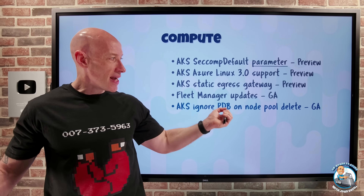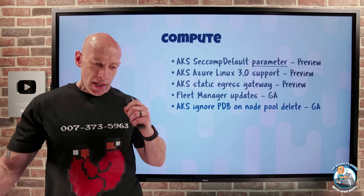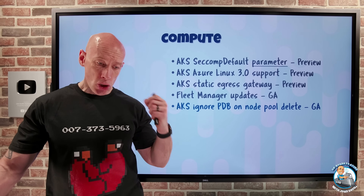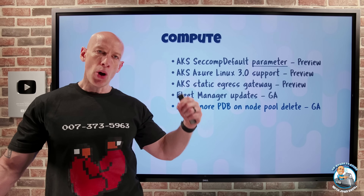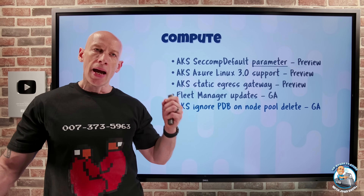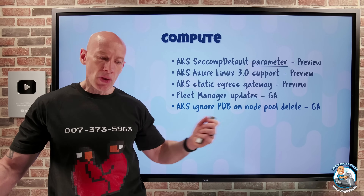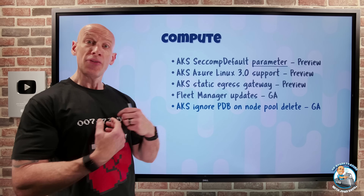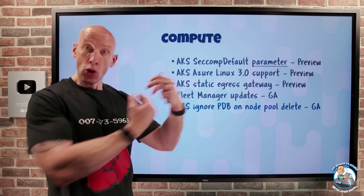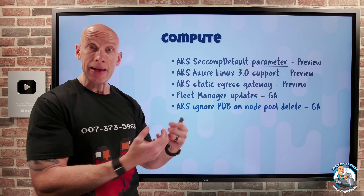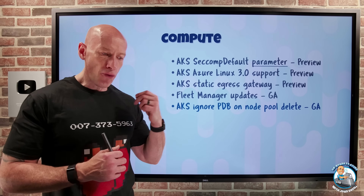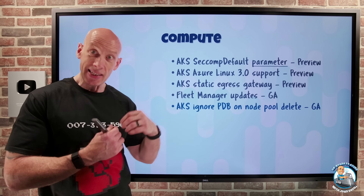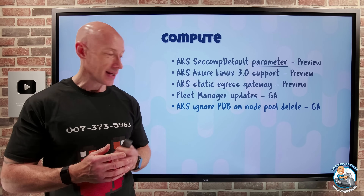AKS ignore PDB on node pool delete is now GA. When you think about pod disruption budgets, the idea is that you always want a minimum number of pods available for a workload. If you tried to delete a node pool that had pods subject to that budget, it would stop you, saying you'd no longer meet the pod disruption budget. What you can now do is set an ignore pod disruption budget parameter to true and it will allow you to go ahead and delete that node pool.